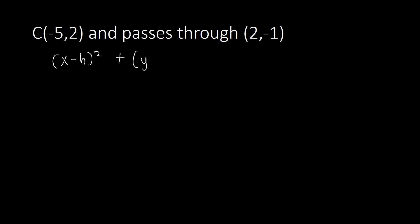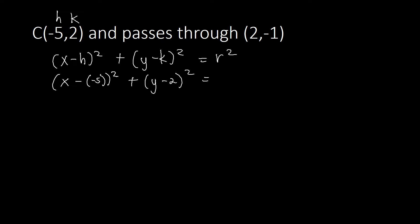Let us now go to another example. This time we have the center at (-5, 2) and the circle passes through the point (2, -1). Again, (x - h)² + (y - k)² = r² is our guide. Plugging in the center with h = -5, we get (x - (-5))² + (y - 2)² = r², which simplifies to (x + 5)² + (y - 2)² = r².